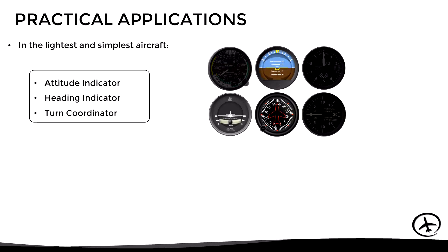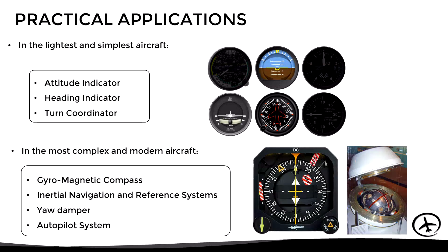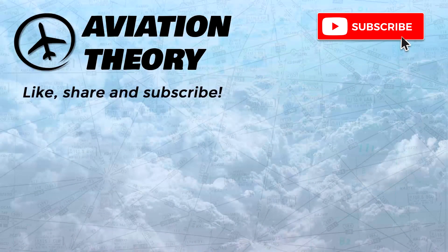Finally, let's see what practical applications gyros have in aviation. Lighter and simpler aircraft use gyros in some of the basic flight instruments. In the most complex and modern aircraft, gyros can be found in other systems such as the gyromagnetic compass, the inertial navigation and reference systems, the yaw damper, and the autopilot, among others. I hope the information presented in this video was useful — don't forget to share, like, subscribe, and leave a comment below. Thanks for watching.